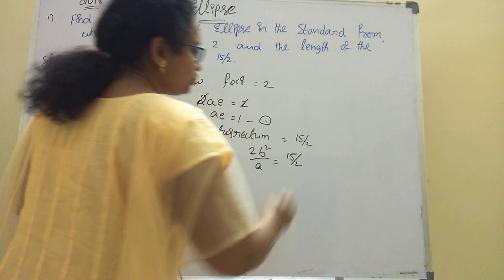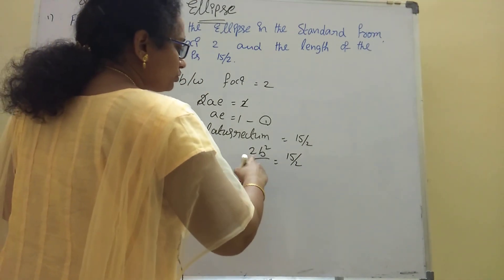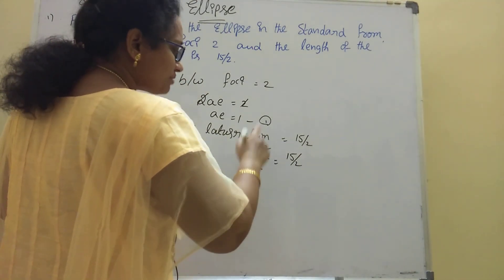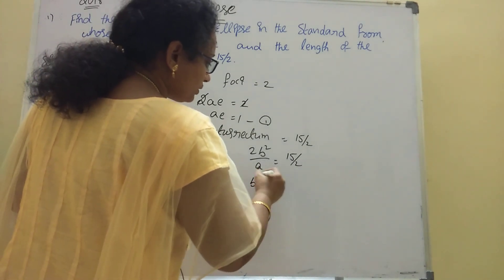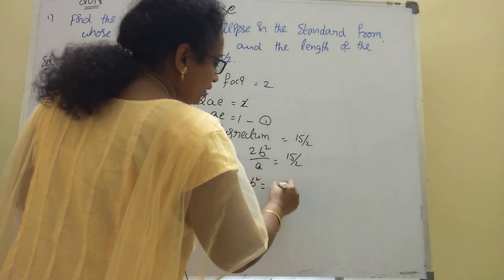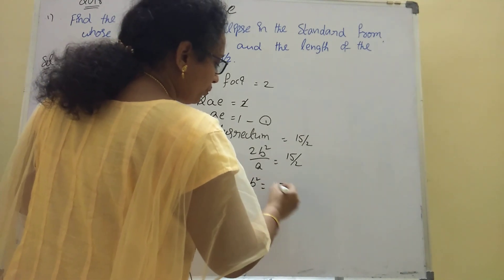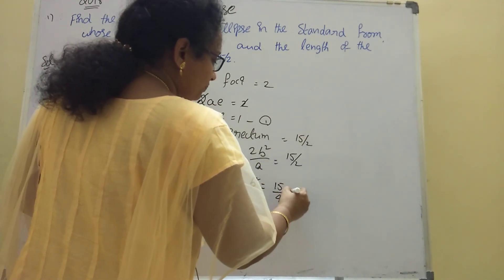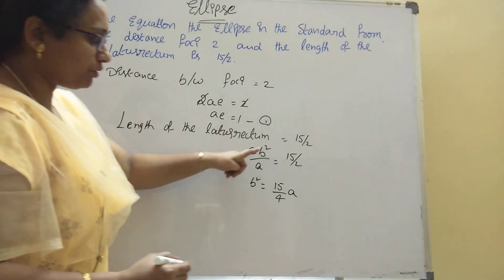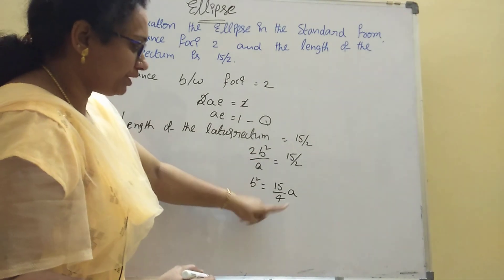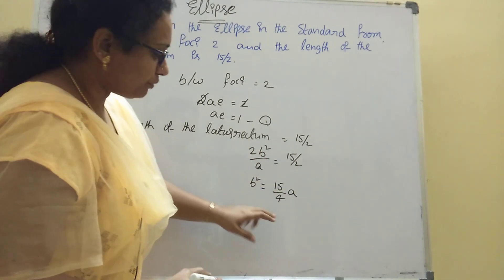The length of the latus rectum formula is 2b²/a. So 2b²/a = 15/2, which gives us the relationship between a and b.